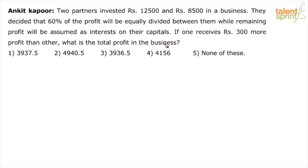This question from partnership is interesting - not like a regular one. Two partners invested 12,500 and 8,500. They decided that 60% of the profit will be equally divided between them, meaning each one gets 30% from the first 60%, while the remaining 40% of profit will be assumed as interest on their capitals.